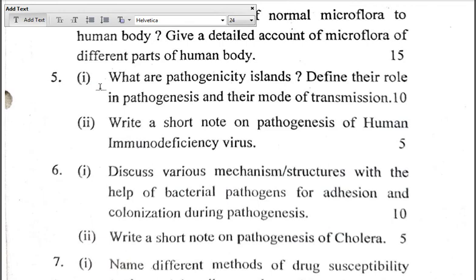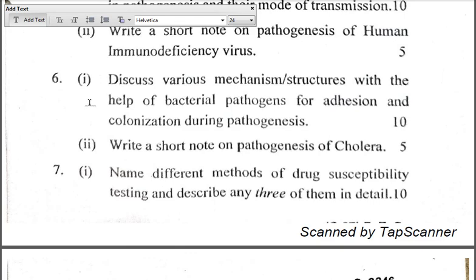Question five, part one: What are pathogenicity islands, also abbreviated as PAI? Define their role in pathogenesis and their mode of transmission (10 marks). Part two: Write a short note on pathogenesis of human immunodeficiency virus (5 marks). Question six, part one: Discuss various mechanisms and structures of bacterial pathogens for adhesion and colonization during pathogenesis (10 marks). Part two: Write a short note on pathogenesis of cholera (5 marks).